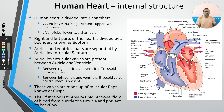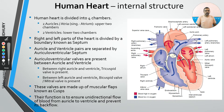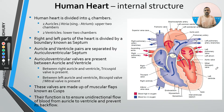Between the atrium and ventricle in each half, there is a valve. These two valves are known generally as auriculoventricular valves. Specifically, between the right atrium and right ventricle, it is called the tricuspid valve. Between the left atrium and left ventricle, it is called the bicuspid valve or mitral valve. These terms are very important and are key points when explaining the structure of the heart.